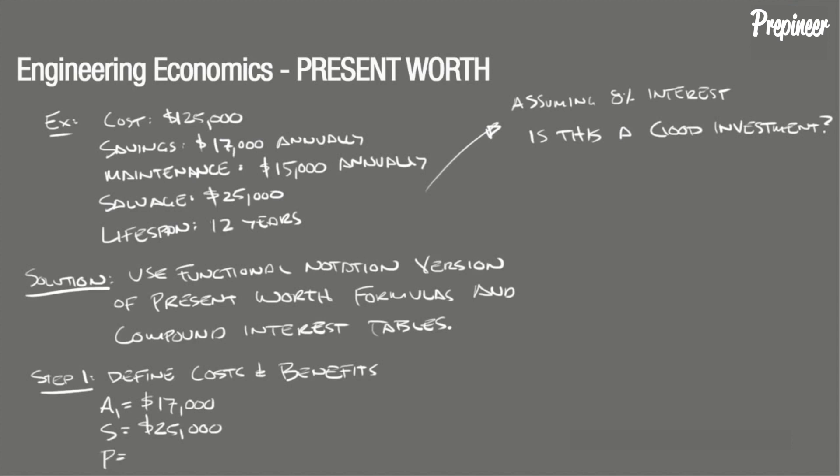We're given an initial cost of $125,000, and this is a minus and is a cost to purchase. And we're given another uniform annual cost, which we'll say is A2, and that's going to be a negative $15,000, which is the cost to maintain.